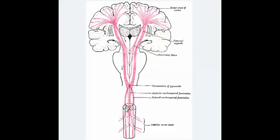From this point on, there are lower motor neurons, where the neurons leave the spinal cord. Eventually, they will synapse with muscles at the neuromuscular junction. That is the lower motor neurons — this is the corticospinal tract.